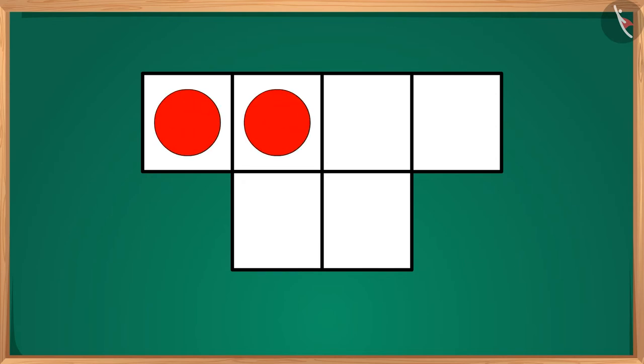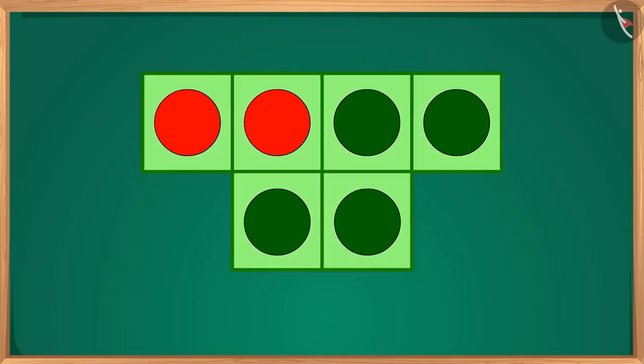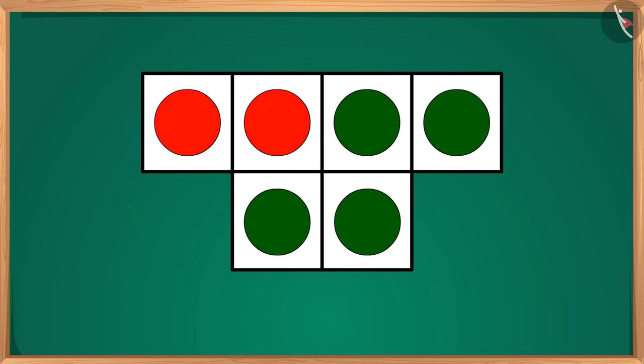...will make one red circle in each. Can you tell me how many green circles do I have to make so that all the six boxes have one circle in each? Let's find out: one, two, three, four. We have to make four more circles and now all the frames have one circle each.